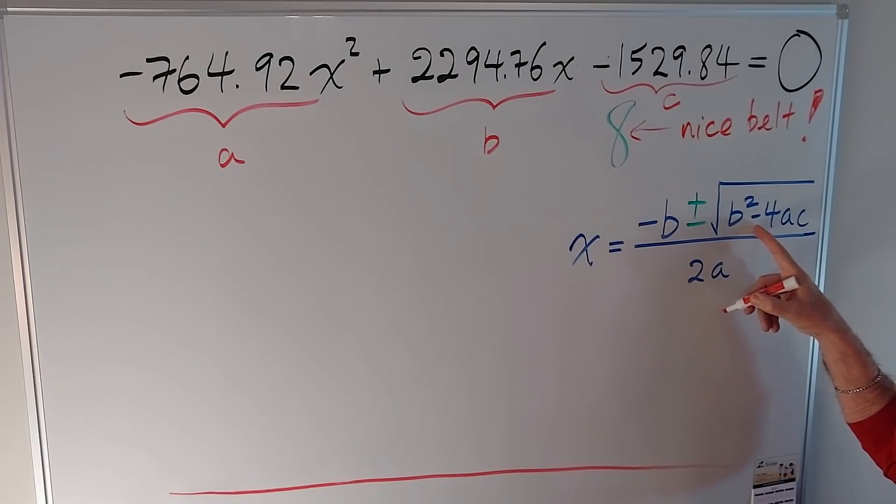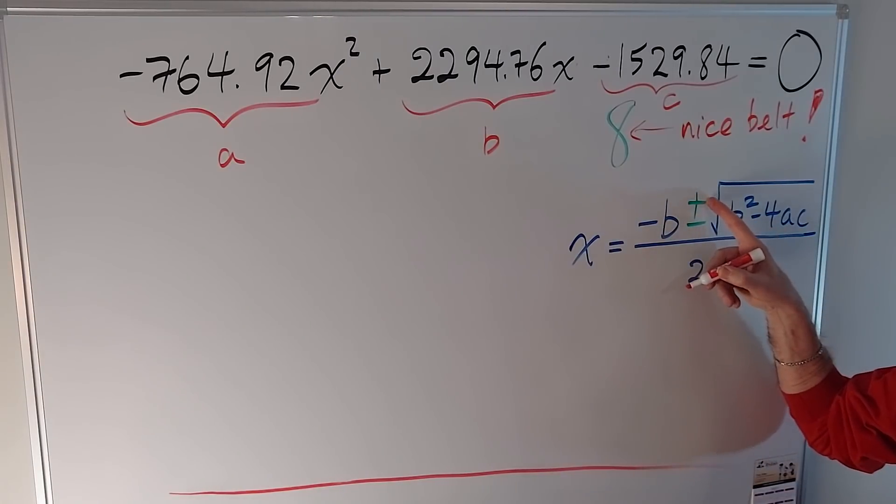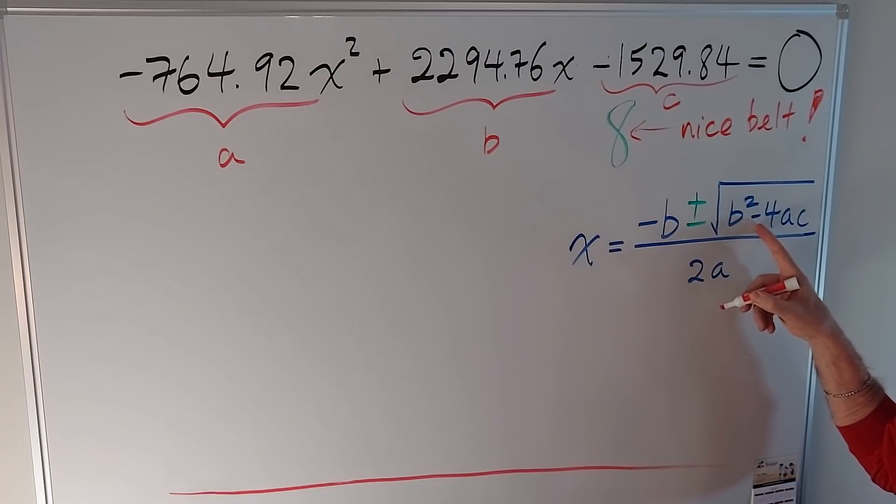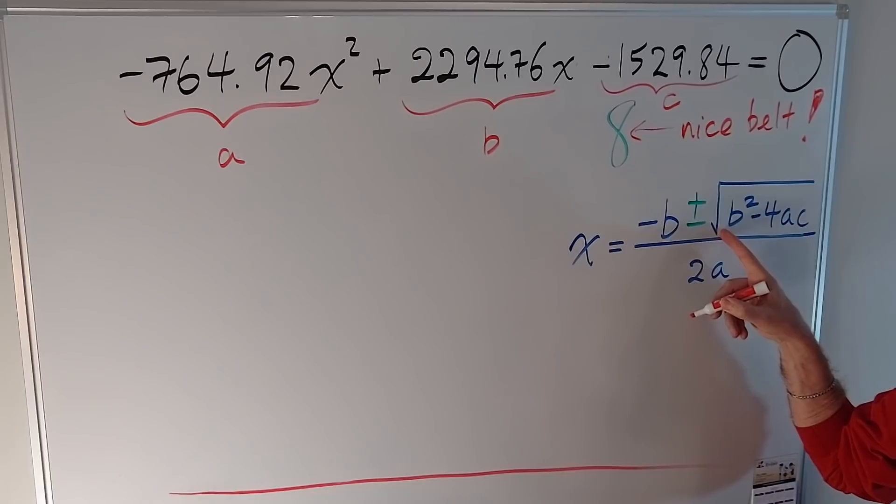If b squared minus 4ac is zero, you get one solution. You just get negative b over 2a because that disappears. If it's positive, you get two solutions because you can take the square root of a positive number. You get plus or minus that number along with the rest. But if it's negative, you can't take the square root of a negative number unless you consider imaginary numbers. So then you see there's no solution.